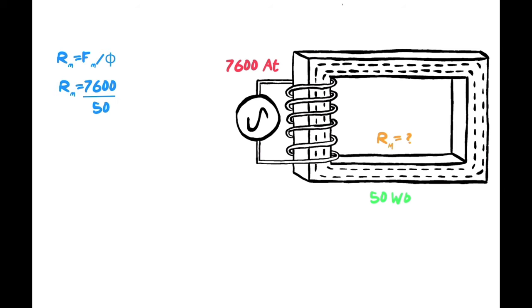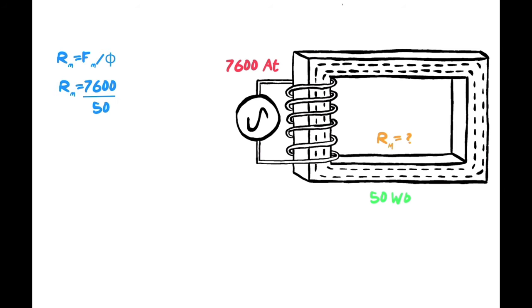What we're going to do is use what we know, these values, to determine what the reluctance of this circuit is. So Rm, which is what we're looking for, is equal to Fm which is your 7600 divided by your 50 webers. That then works out to be 152 ampere turns per weber. So that's just using the actual formula itself, we didn't have to move anything around, everything was easy peasy.